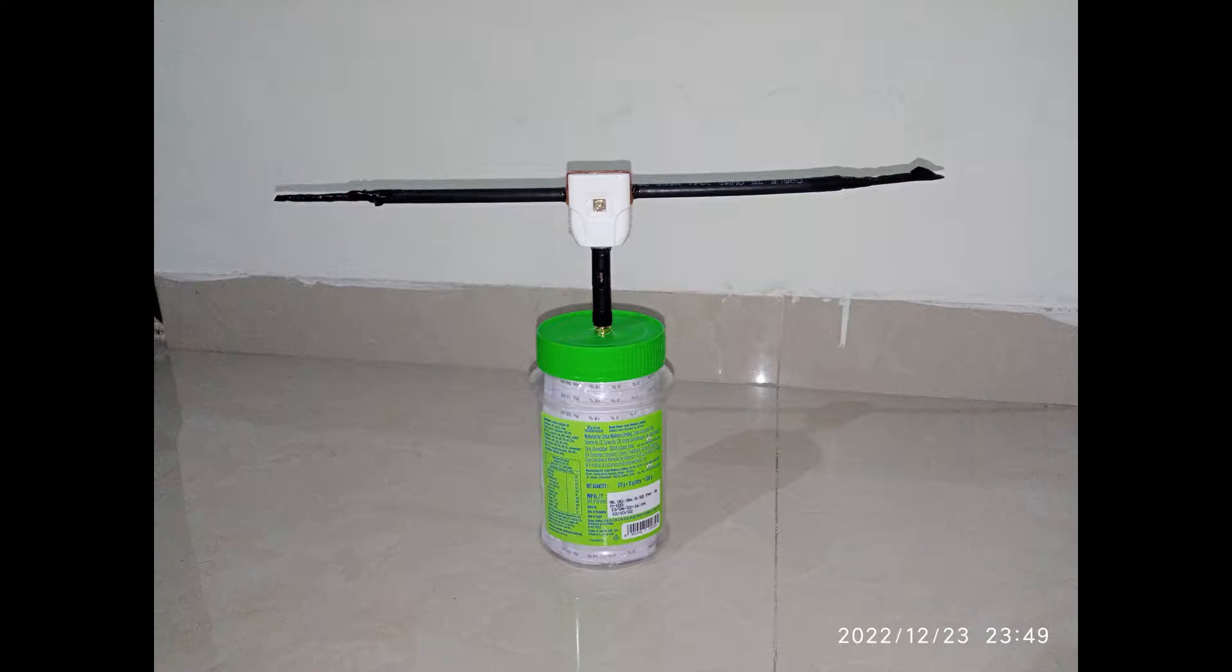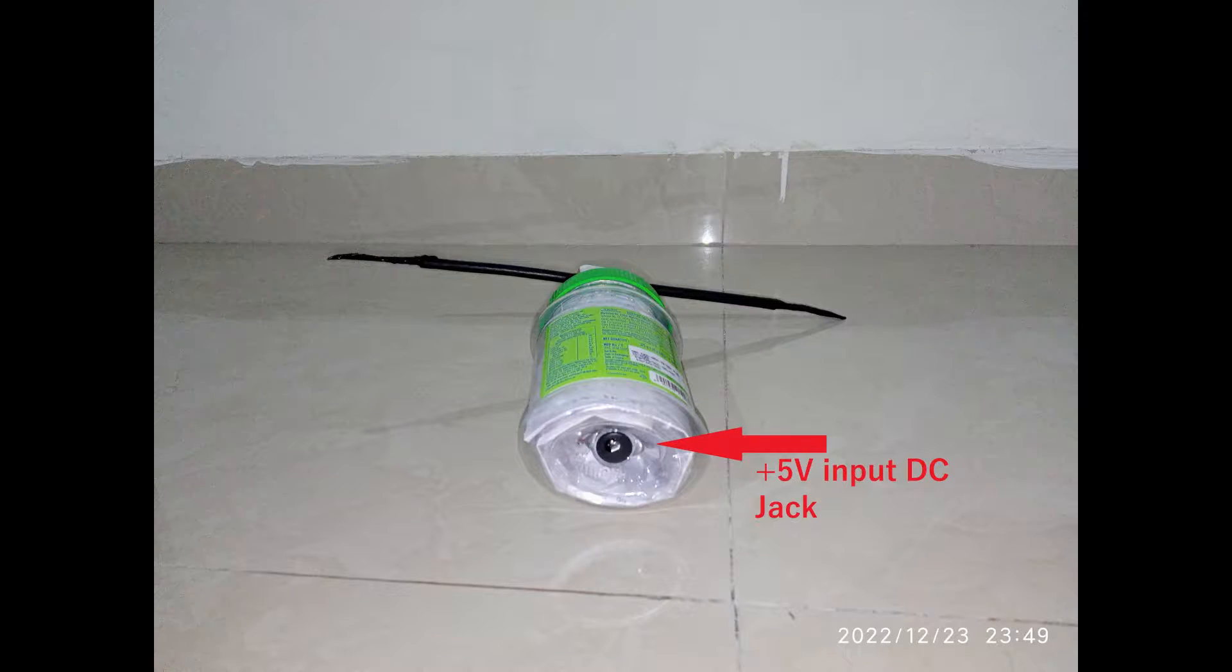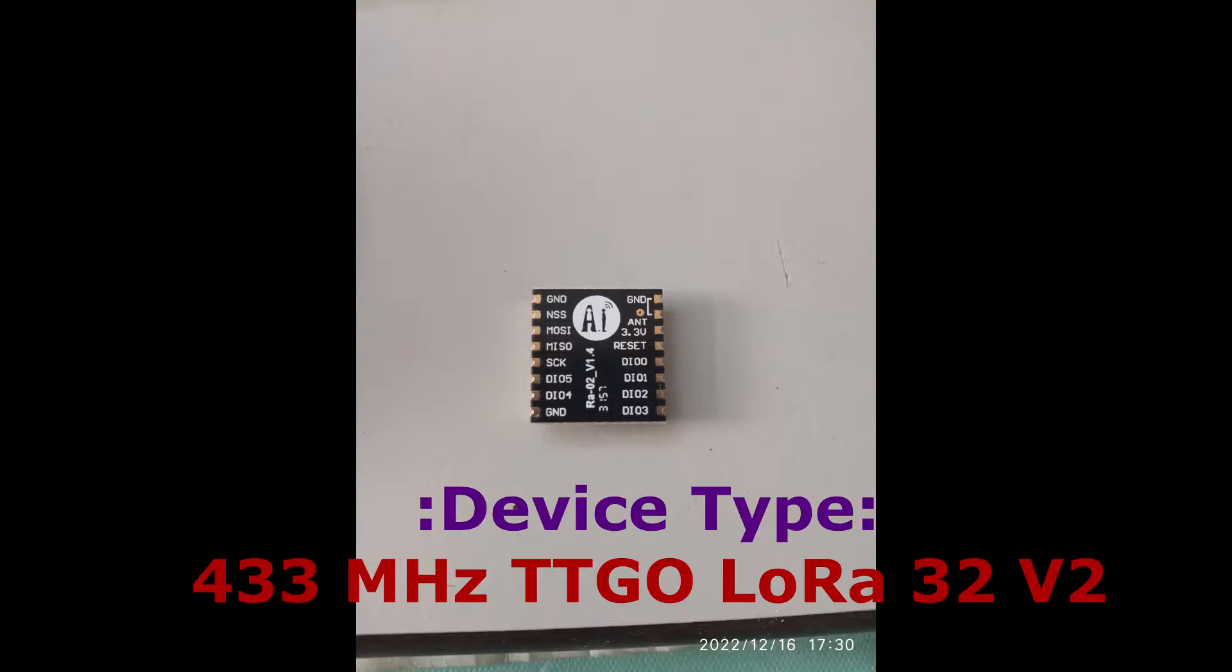Presenting here is my prototype TinyGS ground station which is secured inside a PET jar. A DC socket is provided to power the ground station using external 5 volt adapter. In this prototype I have used AI Thinker LoRa RA02 module which operates at 433 megahertz frequency and an ESP32 module.